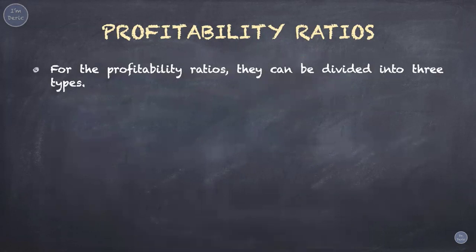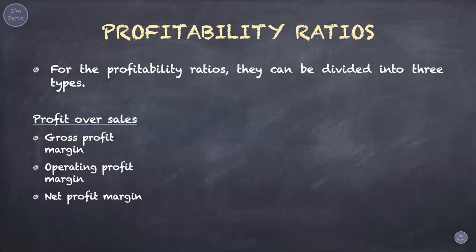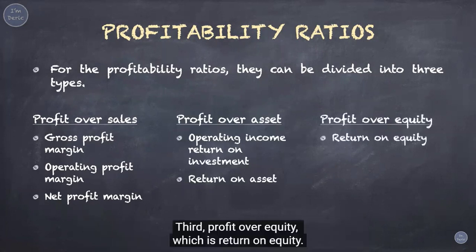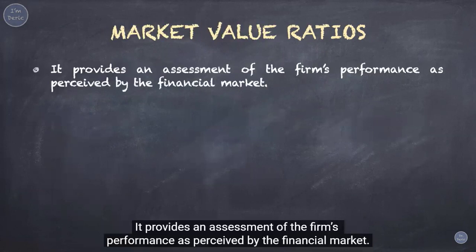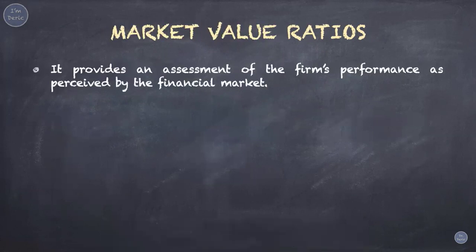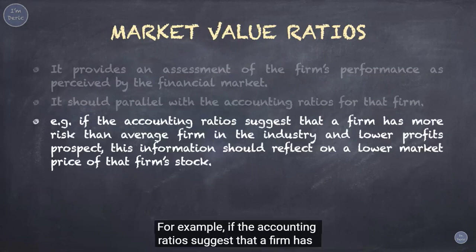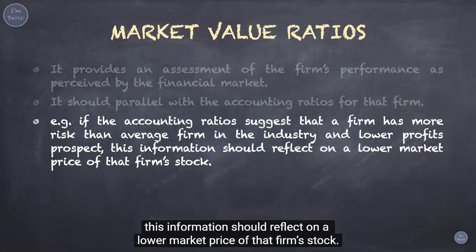As a summary, profitability ratios can be divided into three types: first, profit over sales — including gross profit margin, operating profit margin, and net profit margin; second, profit over assets — including operating income return on investment and return on assets; third, profit over equity — which is return on equity. The last category is market value ratios, which provide an assessment of the firm's performance as perceived by the financial market. These ratios should parallel the accounting ratios — for example, if a firm has more risk than average and lower profit prospects, this should reflect in a lower market price of the stock.